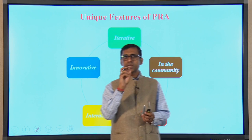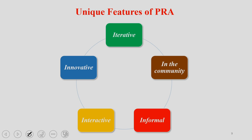Let us look at the various unique features of PRA. PRA is iterative in nature, it involves community and people, it is informal in nature because you meet people and things happen through dialogue and interaction. Obviously it is very much interactive and also innovative in nature. So: iterative, community participation, informal, interactive, and innovative — these are the unique features of participatory rural appraisal.